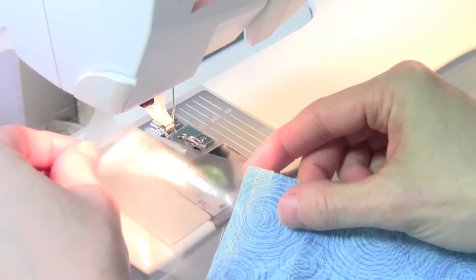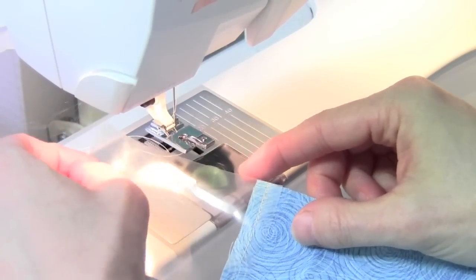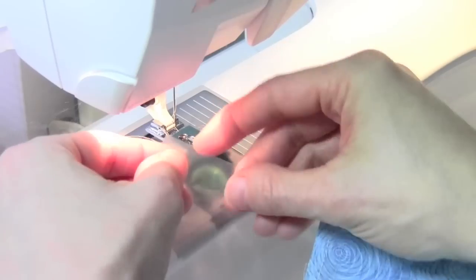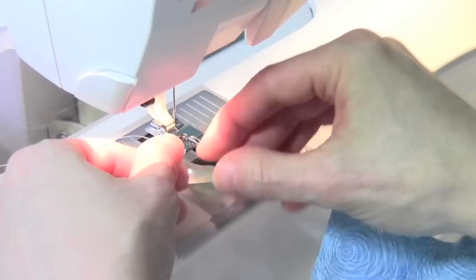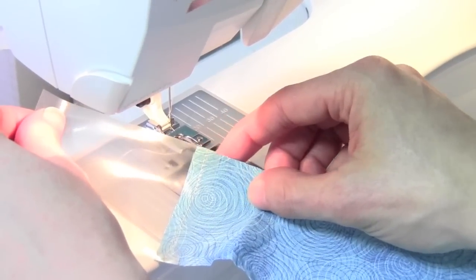If you're having any fabric that's giving you difficulties getting it started, stitch a piece of water soluble stabilizer onto the end and use this as a runway. You can go ahead, do your folds here, get it all going into the foot properly, and by the time it reaches the fabric you'll be set to go.